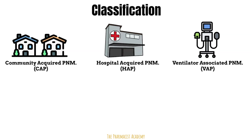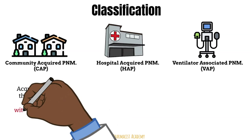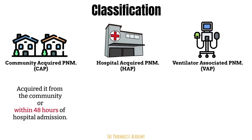Bacterial pneumonia can be classified into three: community acquired, hospital acquired, or ventilator associated pneumonia. In community acquired pneumonia, it is acquired from the community or within 48 hours of hospital admission. This means the patient was infected outside the hospital, came to the ED with signs and symptoms of pneumonia, and was evaluated. Once a diagnosis of pneumonia is made, we can say it's community acquired, or CAP, even if the patient had been in the hospital for less than 48 hours.